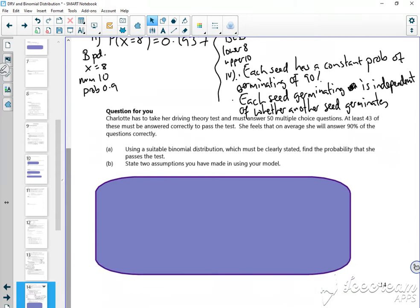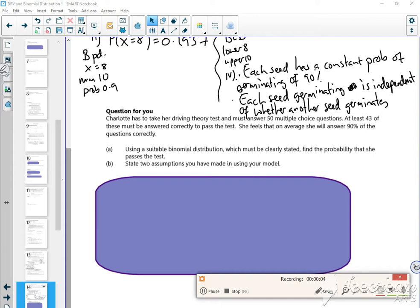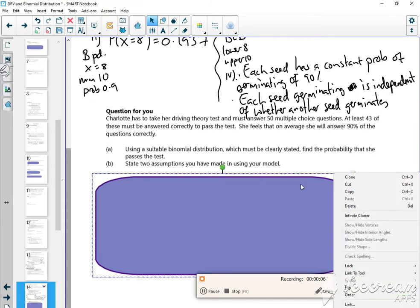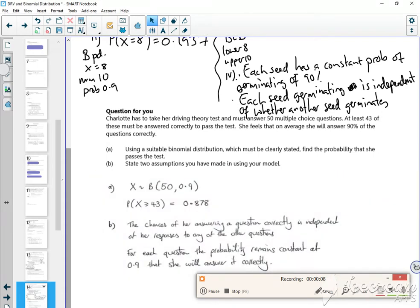There's another question for you. I'll open it up so you can see it. It says Charlotte takes a driving theory test and must answer 50 multiple choice questions. At least 43 of them must be answered correctly to pass the test. She feels on average she'll answer 90% correctly.